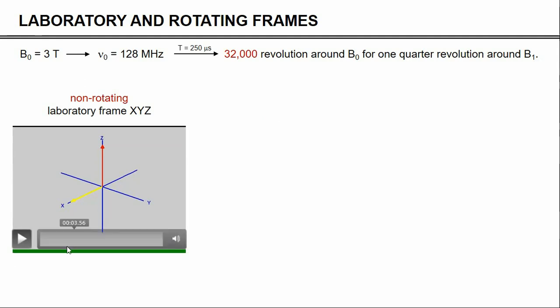Okay, so now we need to talk about rotating frames. So let's say that we are at a magnetic field of 3 tesla, which then corresponds to a Larmor frequency of about 128 megahertz. So let's say that we consider the pulse from the previous slide that had a duration of 250 microseconds. In that time, the spins revolved 32,000 times around B0, but they only revolved 90 degrees, or a quarter of a revolution, around B1. So if you visualize that, you get something like this, where the magnetization is in red along the z-axis, and the B1 is yellow, and the B1 will, of course, rotate at the Larmor frequency.